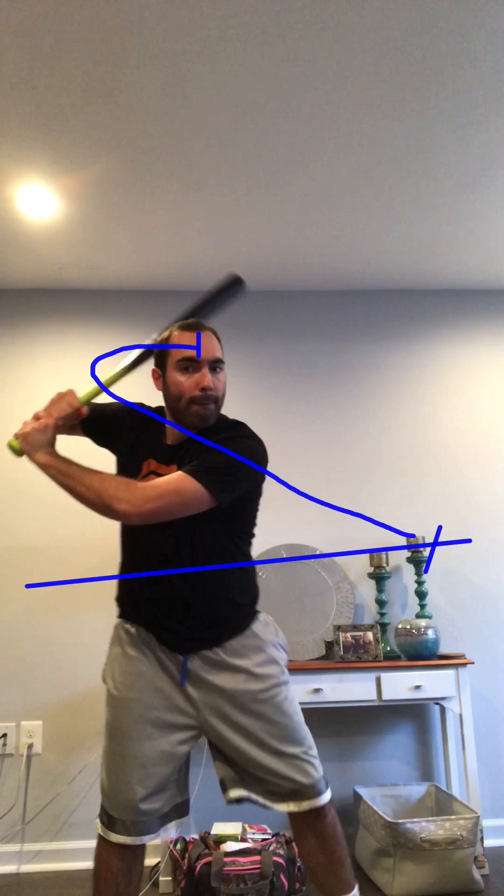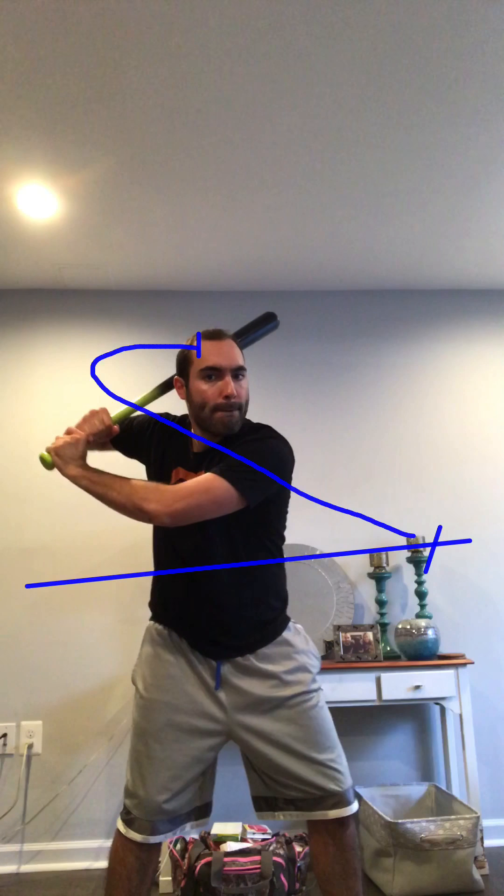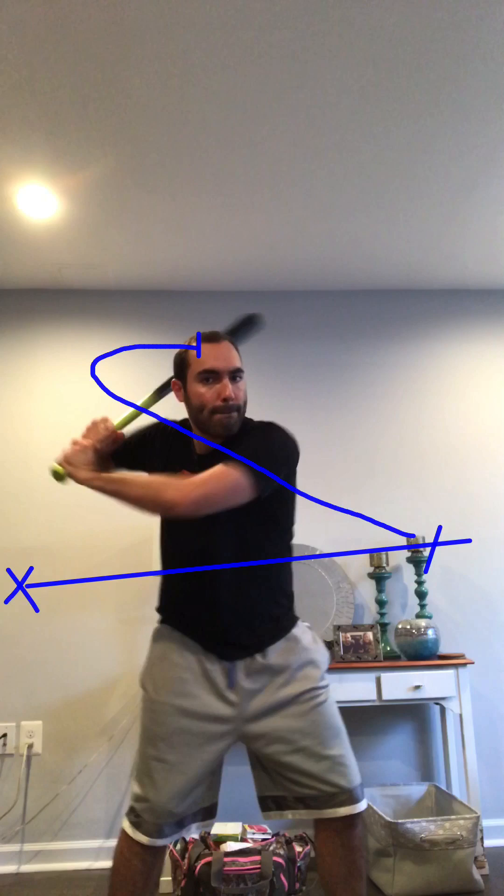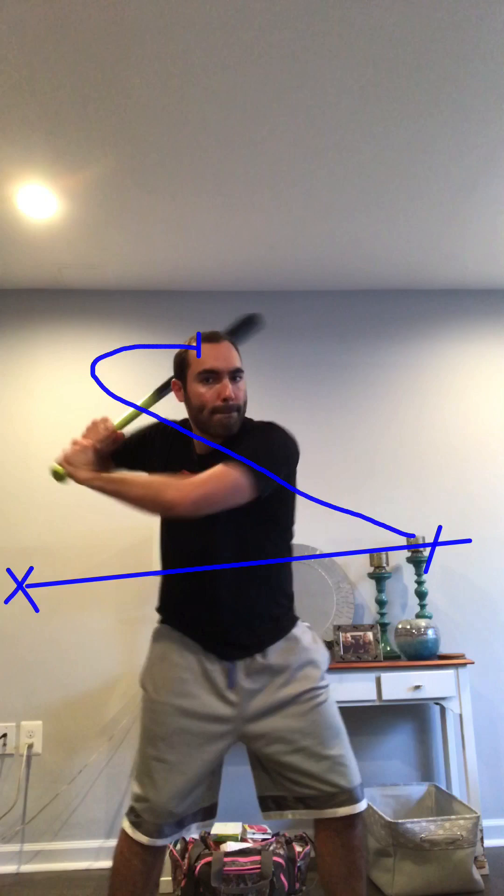Now, the second swing is going to be the way that I teach. There's going to be quite a few differences. And you'll notice that I'm trying to intersect the path of the pitch back here more. So, I'm in the way right here. So, the argument for the first swing that everyone makes is that you're short to the ball. It takes less time to get there.